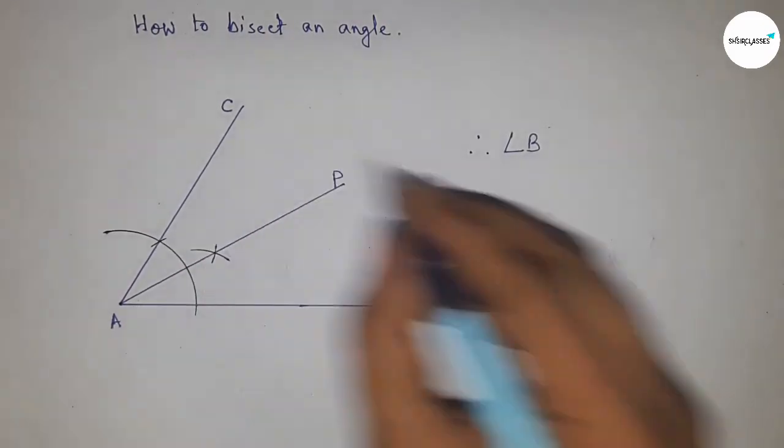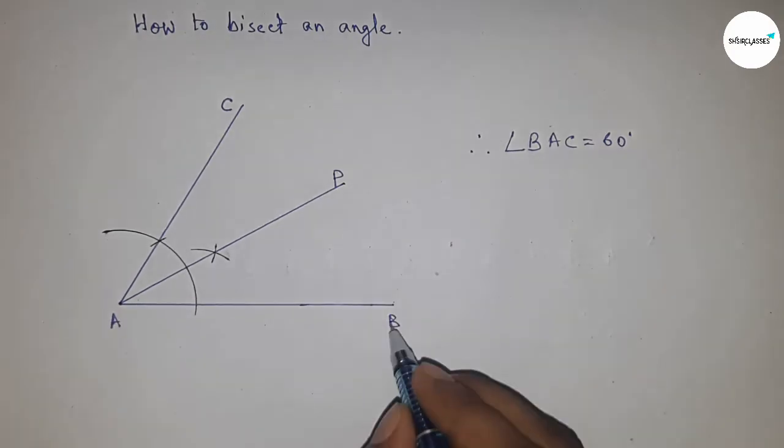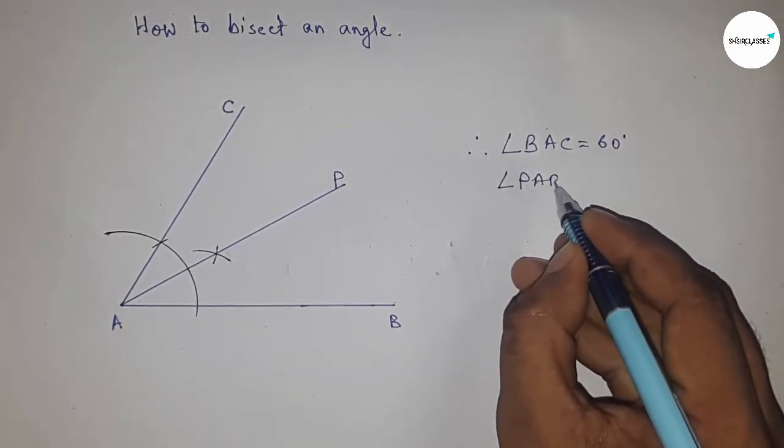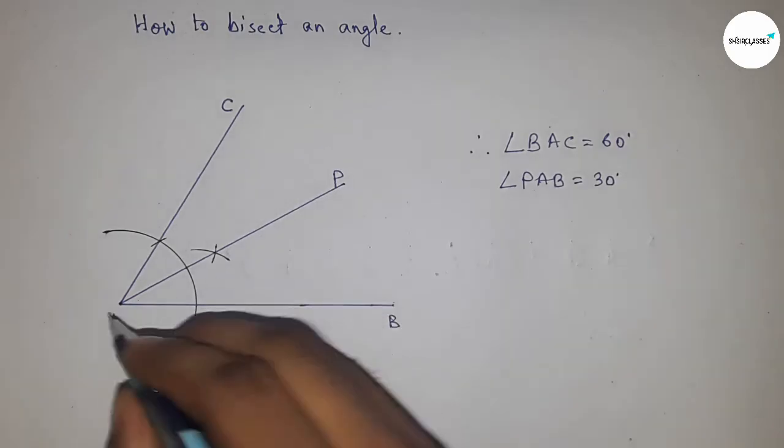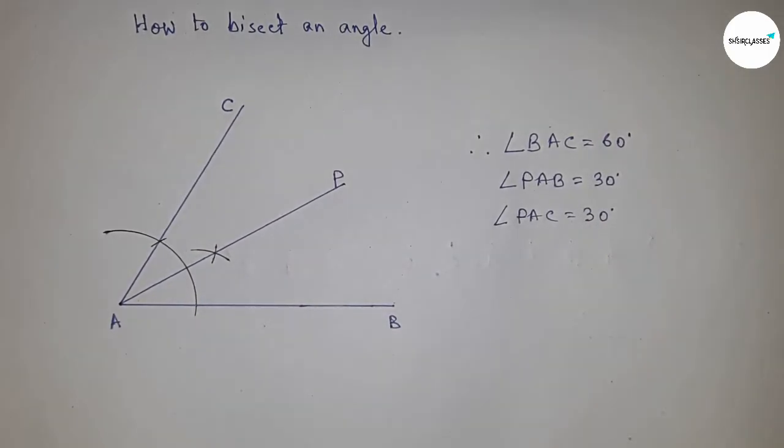Therefore, angle BAC equals 60 degrees, angle PAB equals 30 degrees, and angle PAC equals 30 degrees.